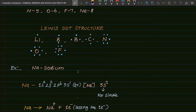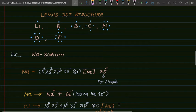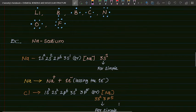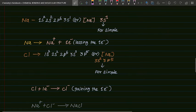For example, for sodium: sodium's atomic number is 11. The electron configuration of sodium is 1s² 2s² 2p⁶ 3s¹, or we can simply write it as neon configuration 3s¹. So sodium has a valence electron of only 1, at the 3s orbital.